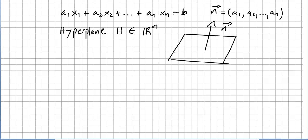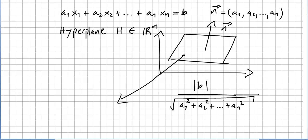Then in another video we saw that the distance from the hyperplane to the origin is given by the absolute value of b divided by the square root of a1 squared plus a2 squared plus an squared. This is the distance from the plane to the origin.